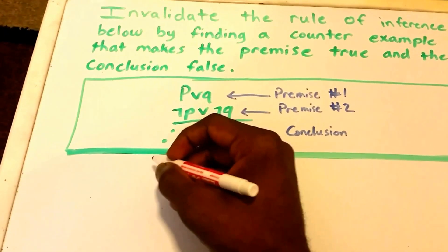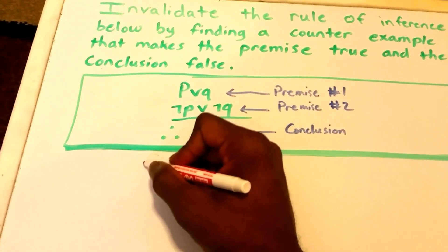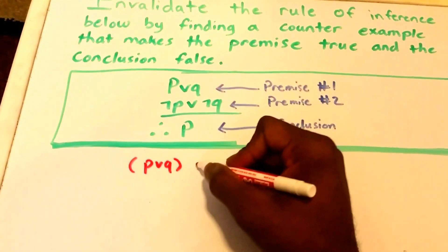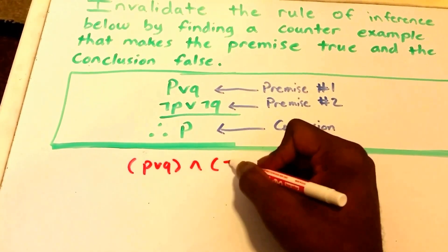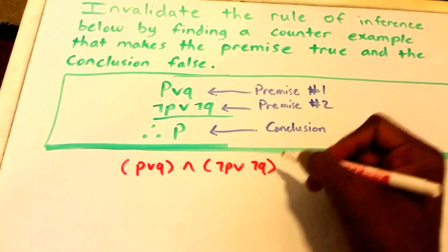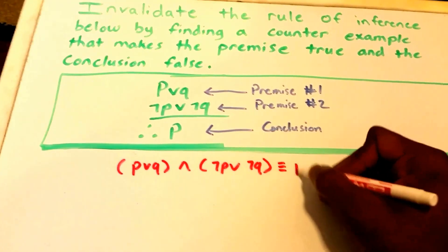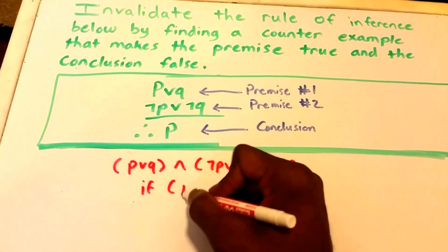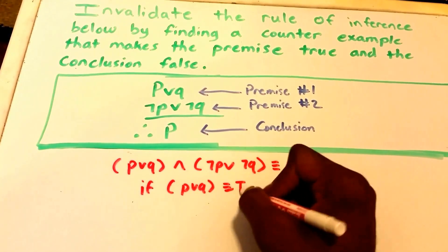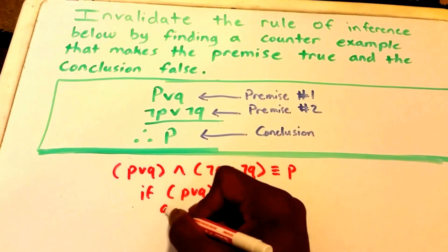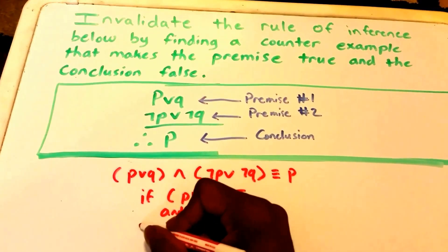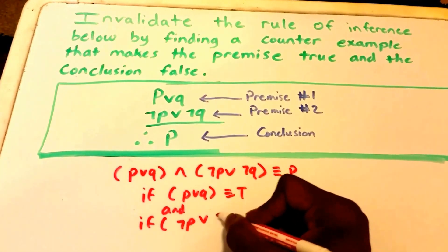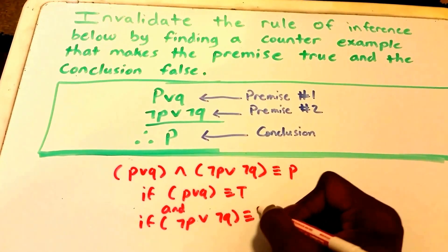So let's write that down to really understand it. This is saying P or Q, and not P or not Q — that equals P — if P or Q is true, and if not P or not Q is true.